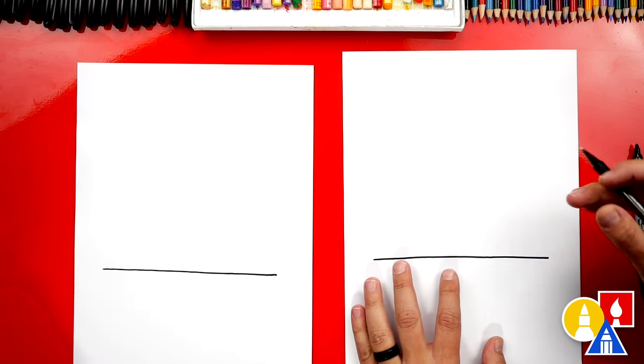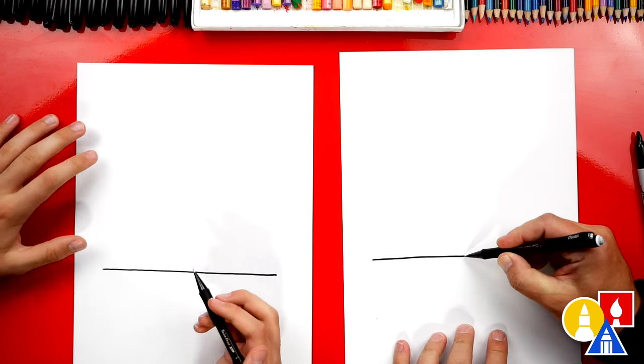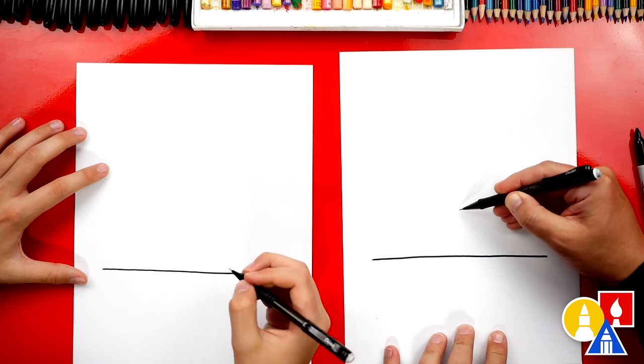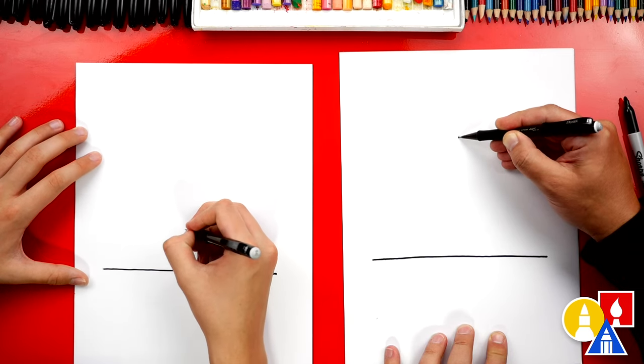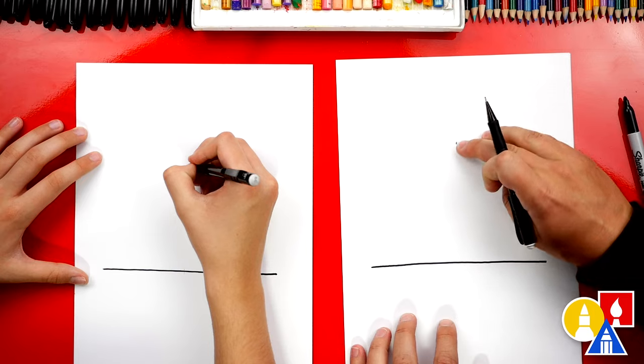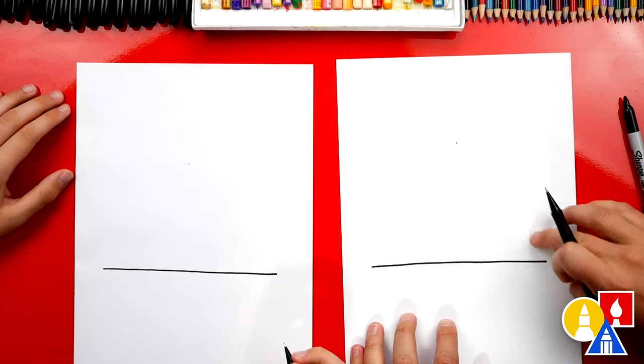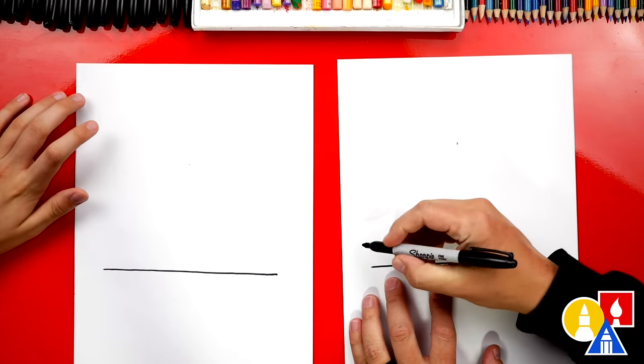Now we're going to switch to our pencil and we're going to split our line in half. So right about here in half, we're going to draw an imaginary line that goes straight up and then we're going to add a point up here at the top. Now this is the center or the point of our triangle. So now we can switch back to our marker. That's just a guide point. We're going to erase that later.